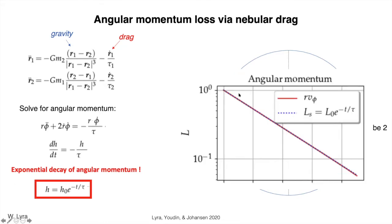This line here, the red line, is the numerical solution. And then the dashed line here is the predicted exponential decay of angular momentum. So, yeah, they match.